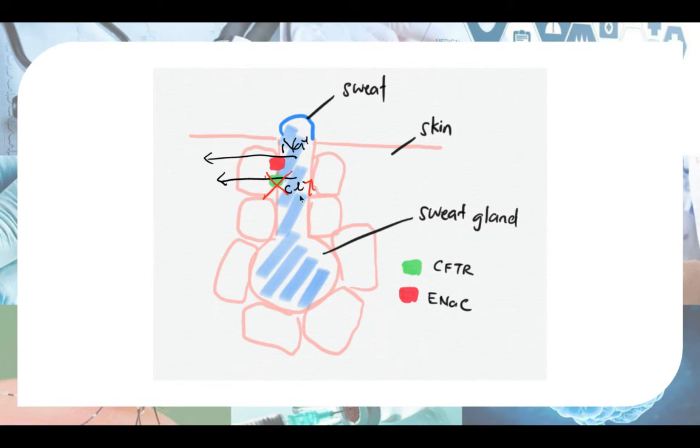So levels of sodium and chloride become higher. Either no or less chloride gets reabsorbed and less sodium gets reabsorbed. So more sodium chloride is in your sweat. And what is sodium chloride? Sodium chloride is salt. So that's why people say that in people with cystic fibrosis, they have more salty sweat.